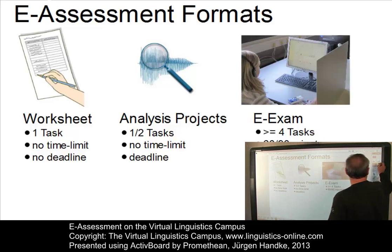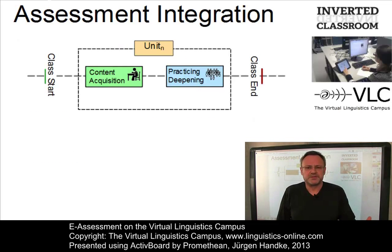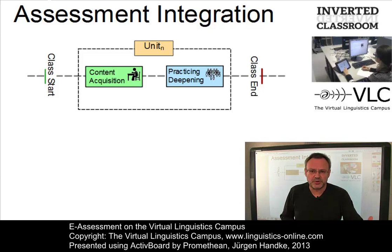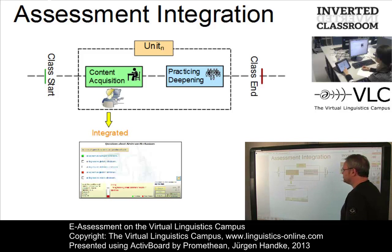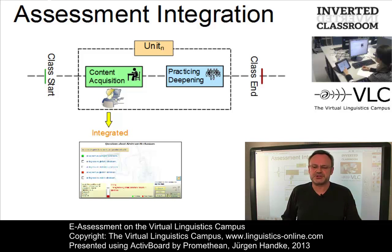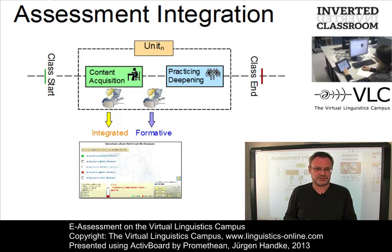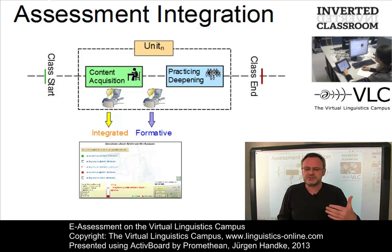How can we use these assessment types within a class? The on-campus classes offered via the Virtual Linguistics Campus are organized according to our inverted classroom mastery model. This model presupposes that students must have worked through the online content in a self-guided phase before they join the subsequent in-class phase. Three types of assessment are typical for this model. Unit-integrated self-tests allow students to permanently check their own knowledge, presented by the interactive tutor of the virtual session. Formative assessment takes place after the self-guided content acquisition phase and before the in-class meeting, making its results very influential for the subsequent teaching and learning process.